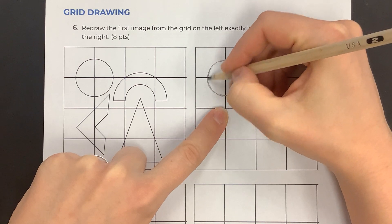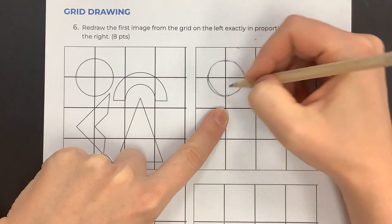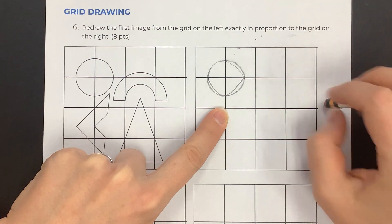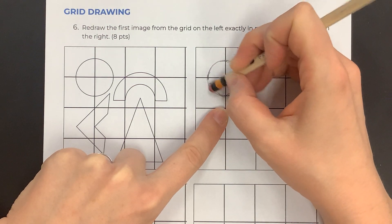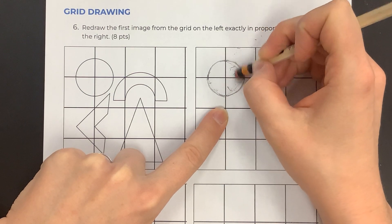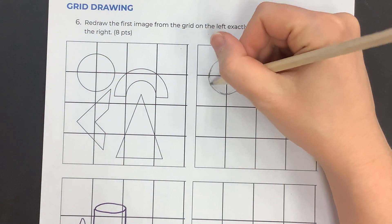Oftentimes what I see is students do something like this and they just try to connect the dots. That's not a circle, right? You have to also draw what you see. Let's move on to the little arch here. We'll do one more together and then we'll talk about the remainder of the assignment.